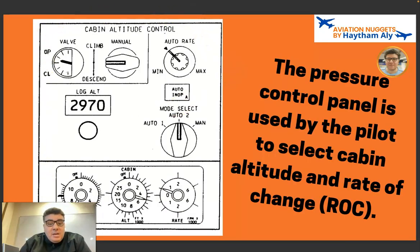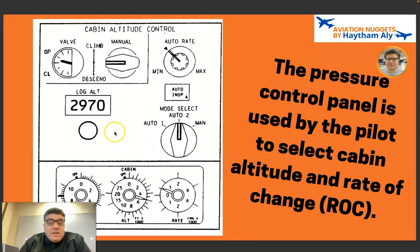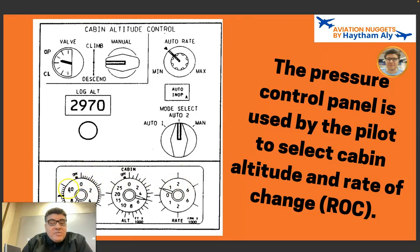Here is an example of the cabin altitude control panel, also called the pressurization panel. The pressure control panel is used by the pilot to select cabin altitude and rate of change, and to monitor cabin altitude and cabin rate of change. There is also a delta P (ΔP) or differential pressure indication — showing the pressure difference between the inside and outside of the aircraft — for structural conformity and fuselage integrity.